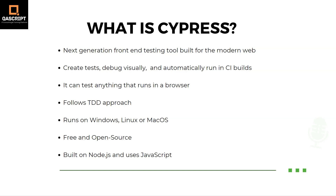Now what you can do with Cypress: you can create tests, you can debug them visually, you can run them, and also you can integrate it with your CI builds. One of the fundamental differences between Cypress and any other test automation tool is it can test anything which runs in a browser. Also, it follows the test driven development approach where you can start writing your tests while you are building your application.